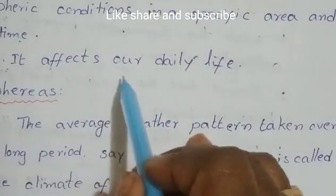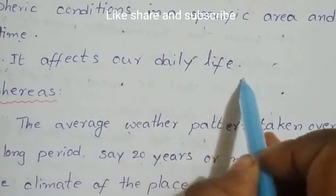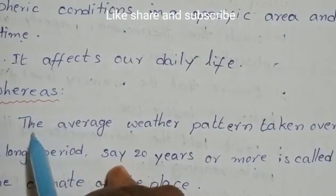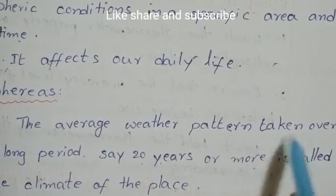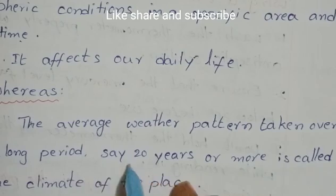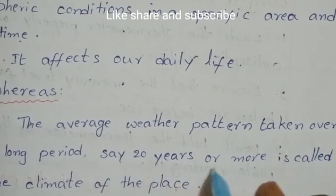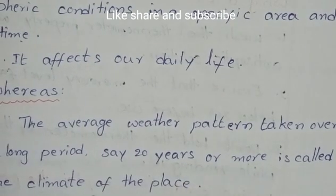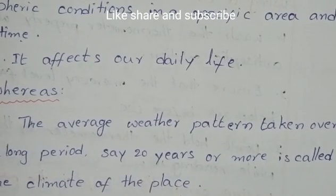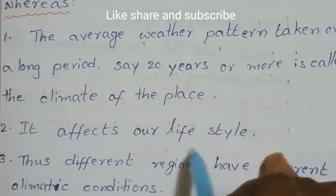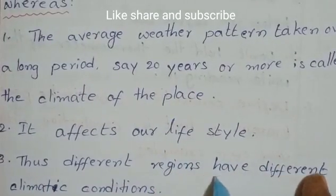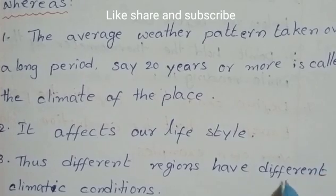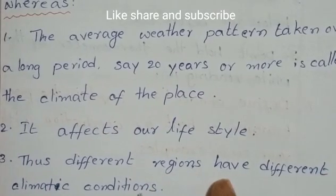Weather affects our daily life. Whereas the average weather pattern taken over a long period, say 20 years or more, is called the climate of the place. Climate affects our lifestyle. Thus, different regions have different climatic conditions.